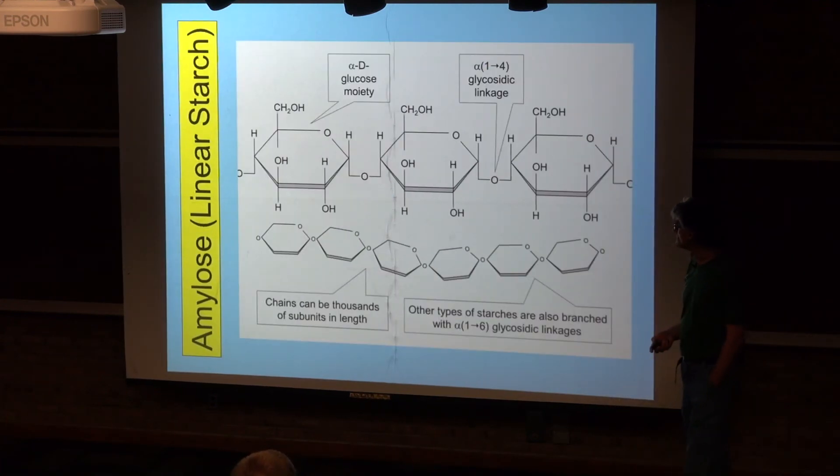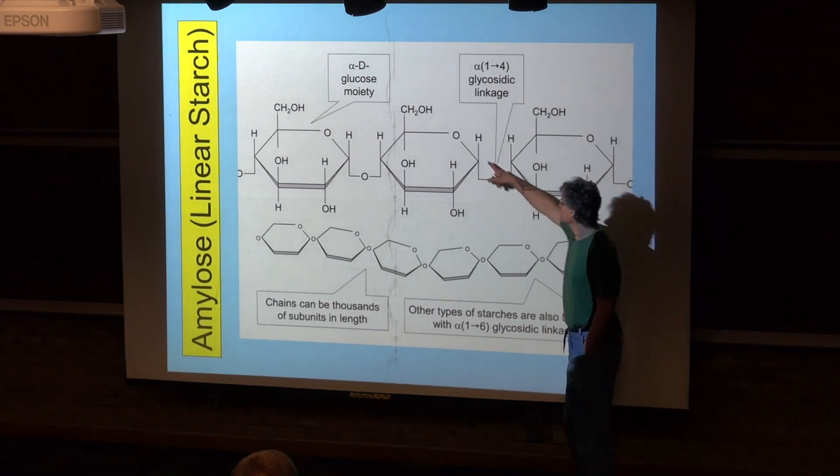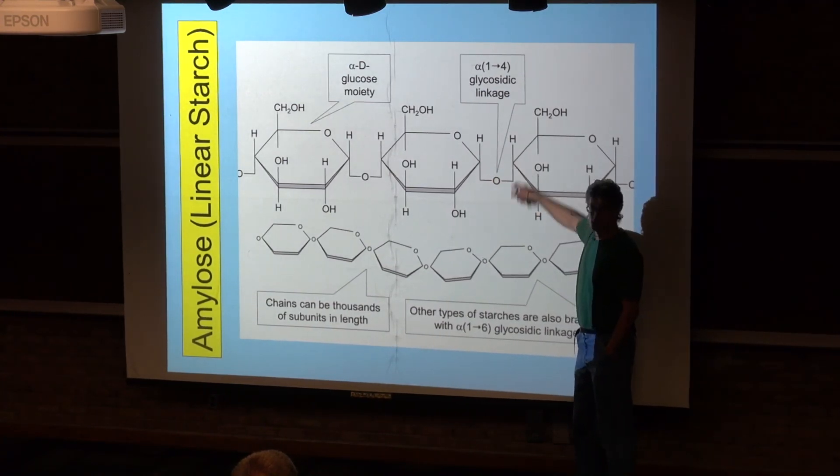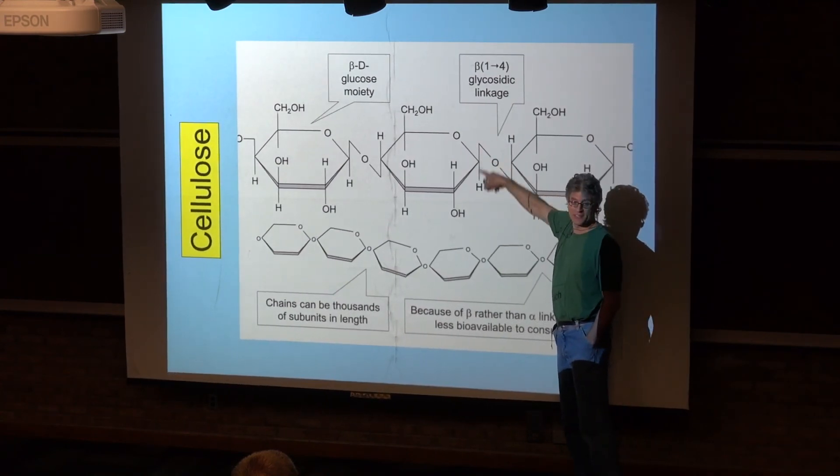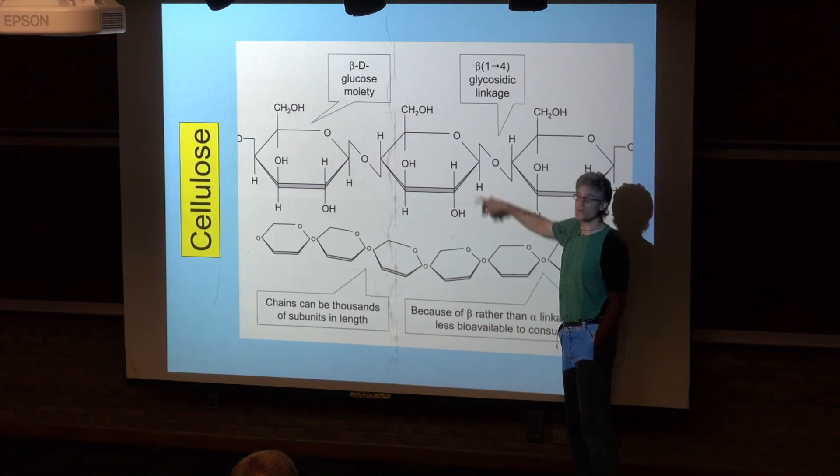So this is looking at amylose again, just for comparison. Alpha-1-4 versus beta-1-4, so the only difference is whether it's coming off from there or coming off from there.